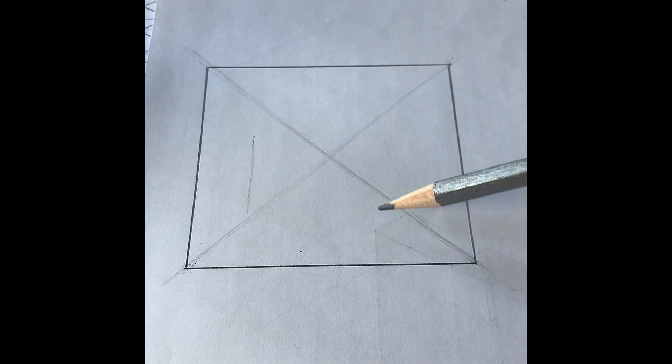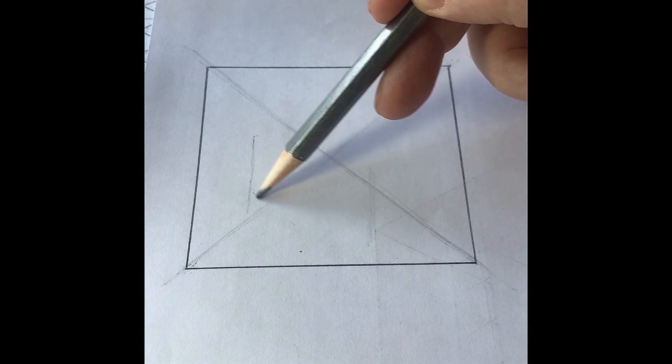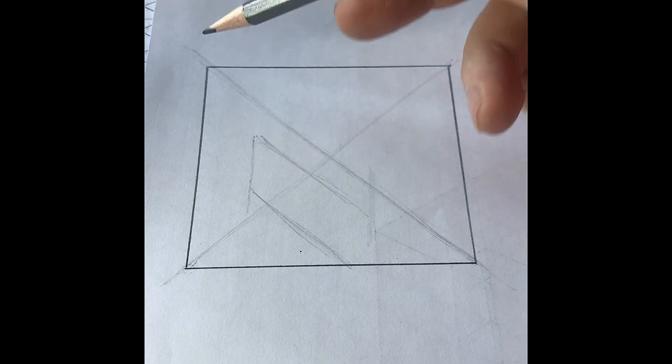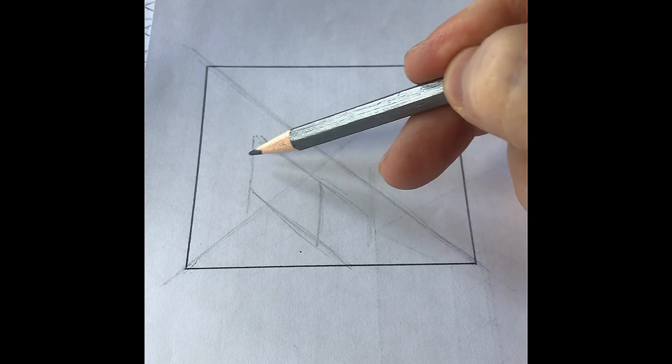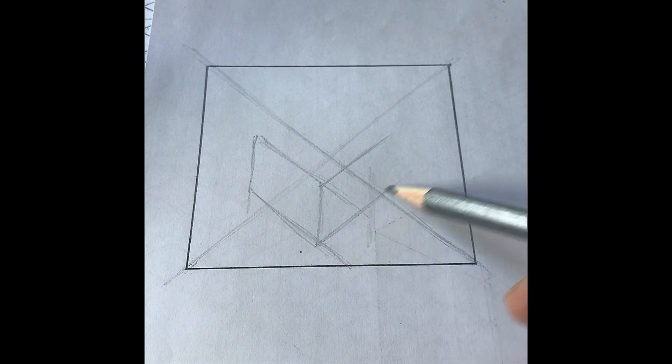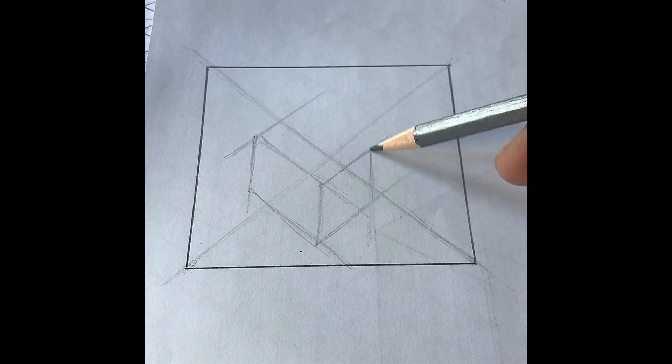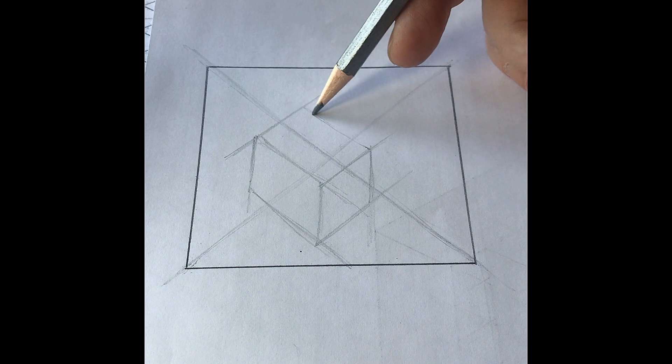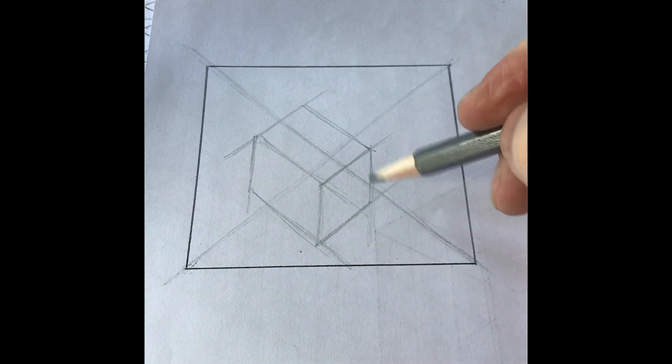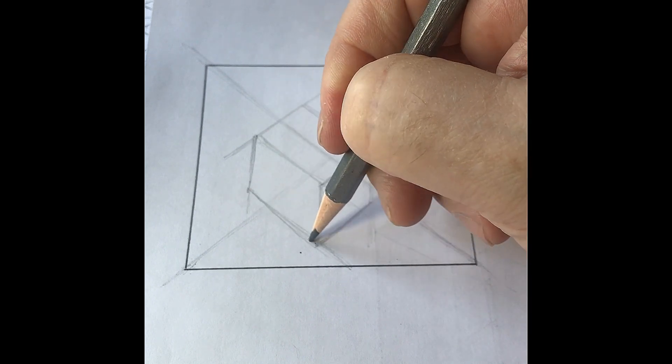So I'm going to start off with the outlines here. What you will notice is I'm going to basically keep the same angle here. This is all drawn freehand, no ruler. And the guidelines are drawn very, very lightly and faintly.